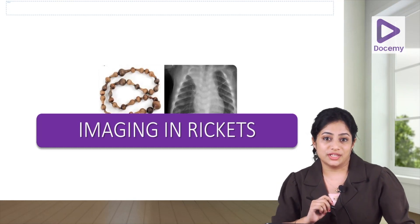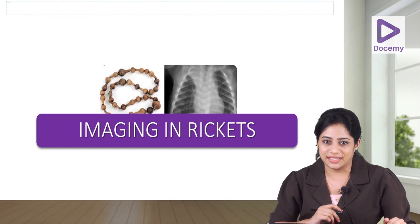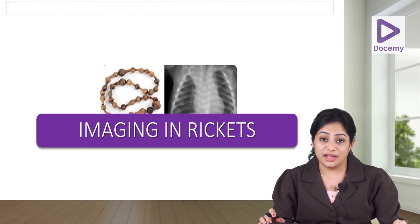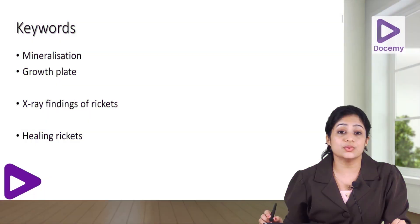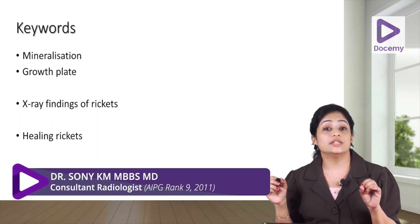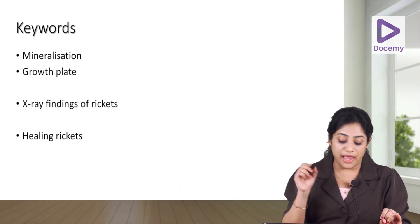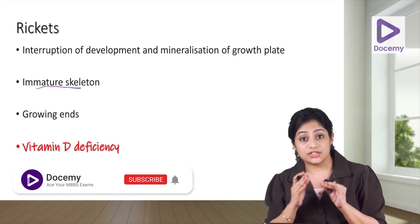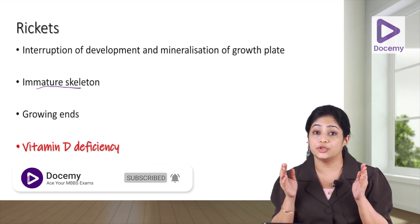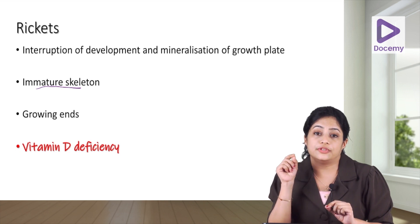The ribs and the rosary shown in the image have something to do with rickets, which we will discuss later. Today we will discuss imaging in rickets. The key words we will cover are mineralization of osteoid, the growth plate, classic X-ray findings of rickets, and healing rickets. Rickets is an interruption of the development and mineralization of the growth plate, or it is a defective mineralization of the osteoid.